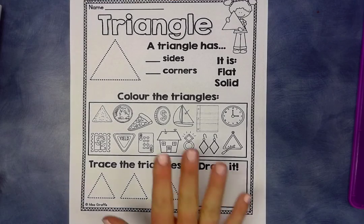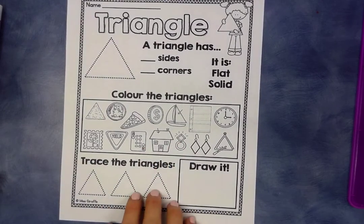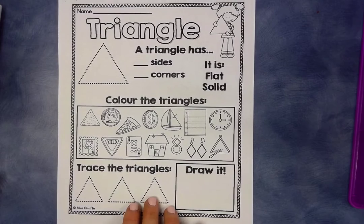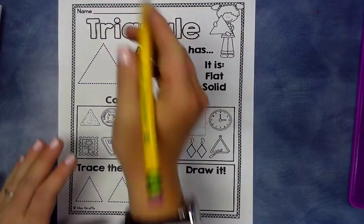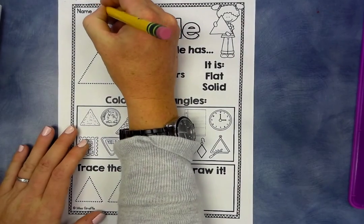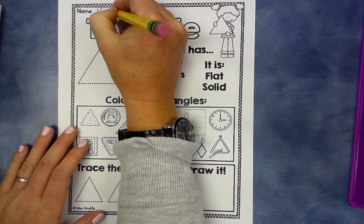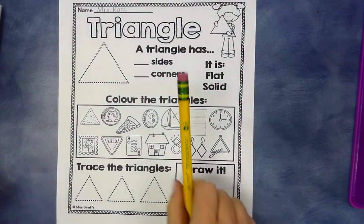Hello everybody, we are going to be working on our triangles today, so you need to get out your triangle page. You are also going to be writing your name at the top, so you will need your pencil and you will need your crayons.